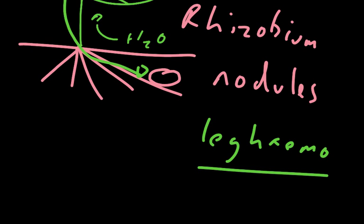Leg hemoglobin, very similar to hemoglobin in us, has an affinity for oxygen, so it binds to the oxygen gas and reduces the amount of oxygen that's present in the nodule. This means that the nitrogen-fixing enzyme isn't poisoned by the presence of oxygen.